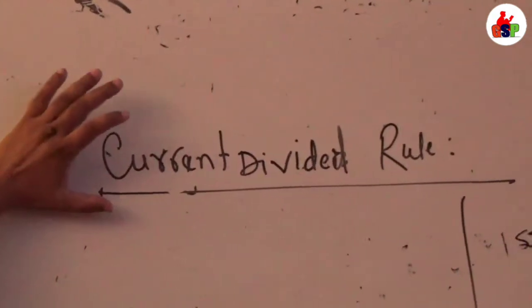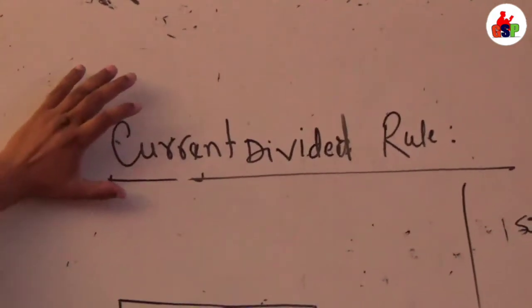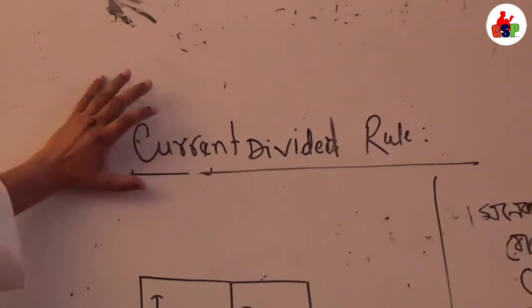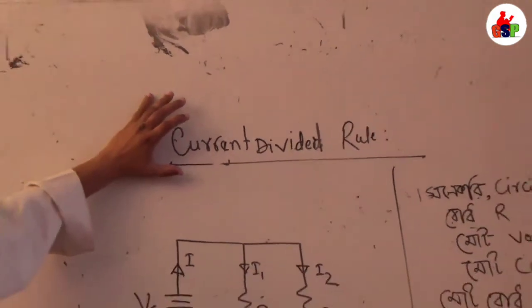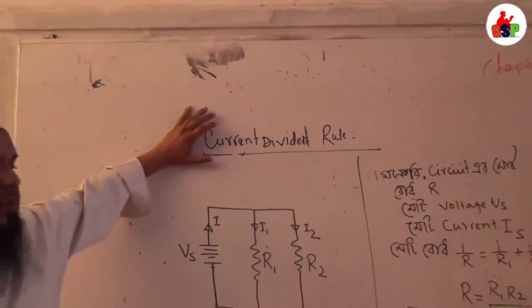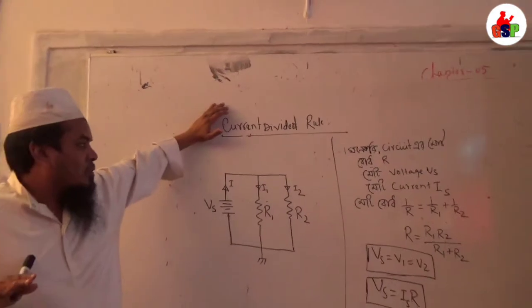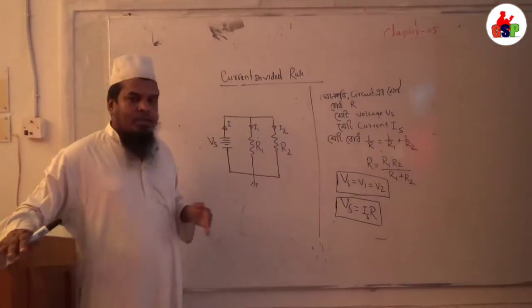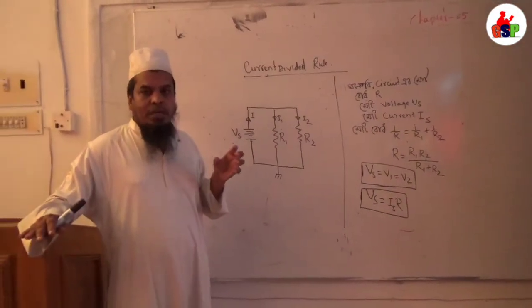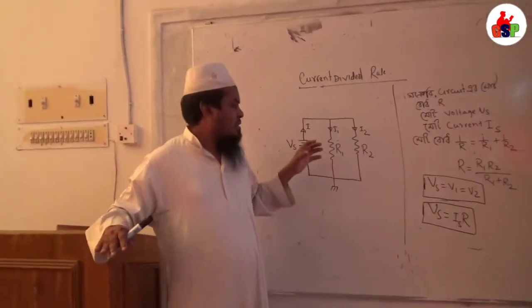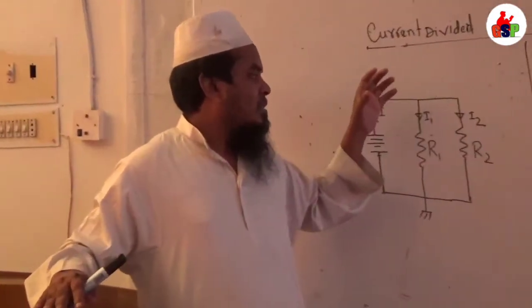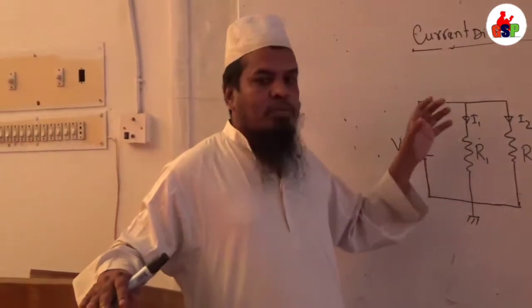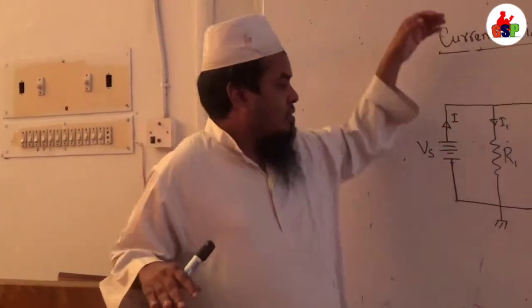Current divided rule. Current is what we call branch to branch. How to divide the current with branch to branch.